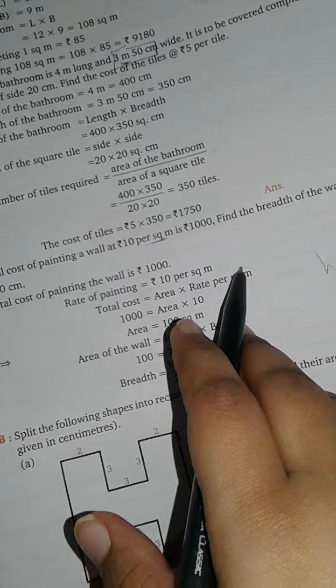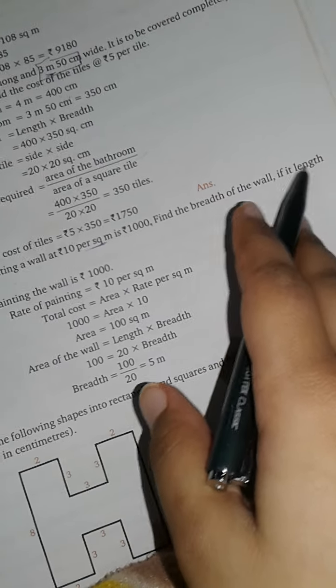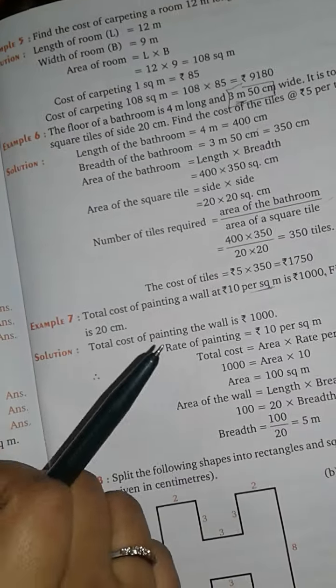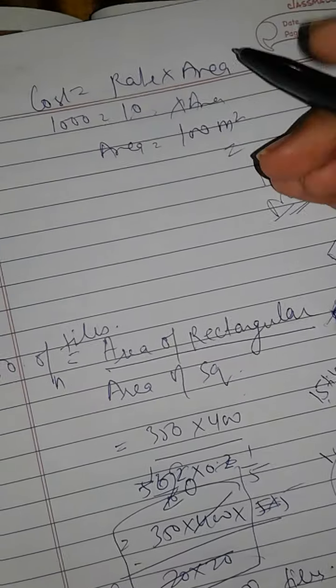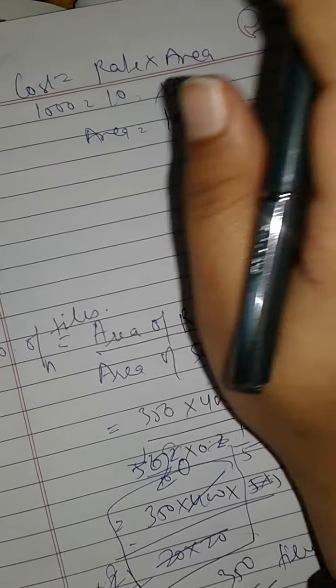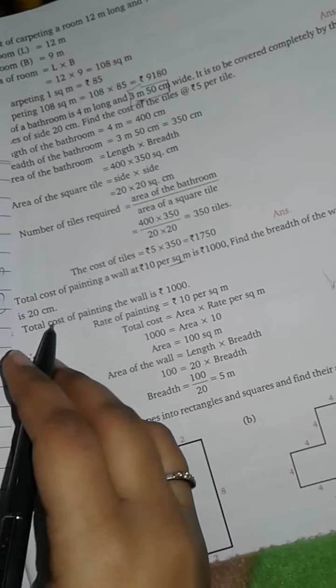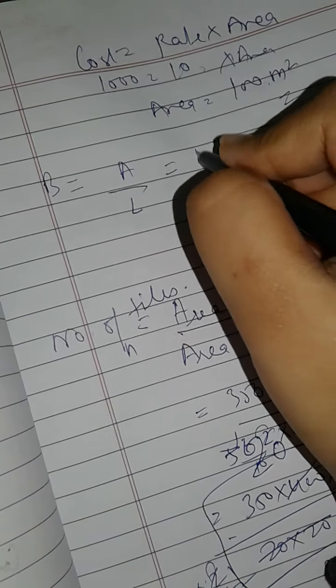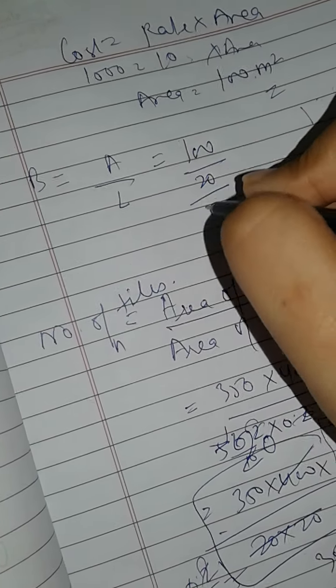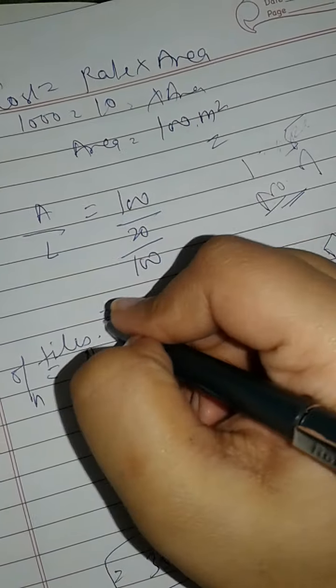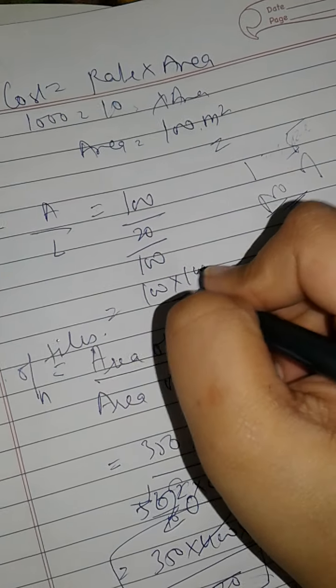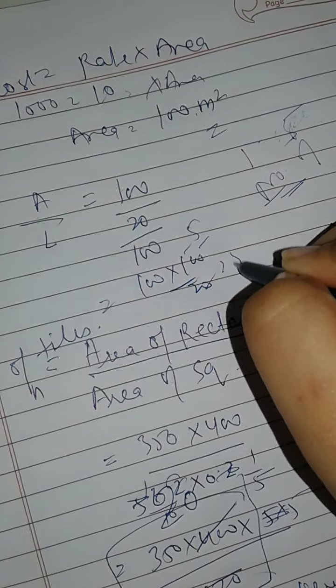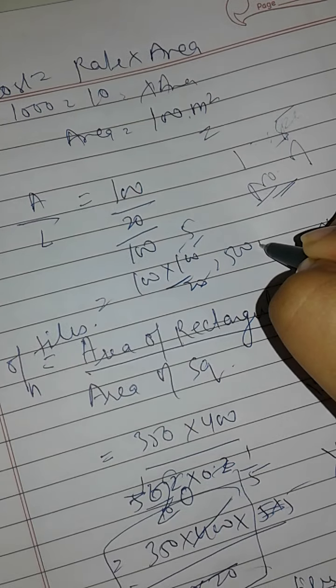So we have area = 100 square meters. Find the breadth of the wall if the length is 20 centimeters. We convert 20 centimeters to meters: 20 upon 100. Breadth formula is area upon length, so breadth equals 100 divided by (20/100), which is 100 into 100 upon 20. Simplifying, the answer is 500 meters. Note: in the book, meter is not converted to centimeters, but ideally we should use the same unit.